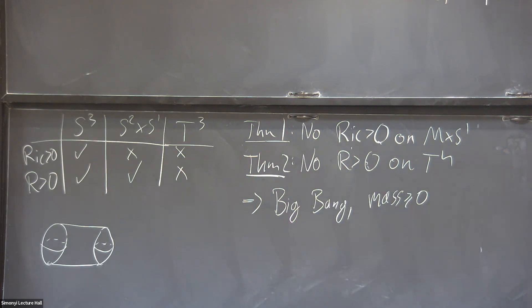And now we can apply theorem one and two. To see that there's no positive Ricci curvature in S² × S¹, and no positive Ricci curvature on T³, which is T² × S¹. And finally, theorem two tells us that there's no positive scalar curvature on T³. So we had to put in maybe a little bit more background, but we still got a very nice picture of understanding dimension three.